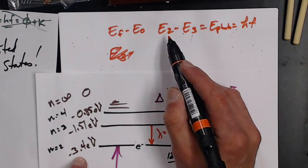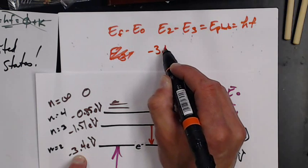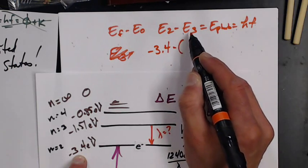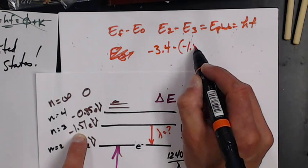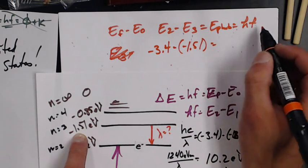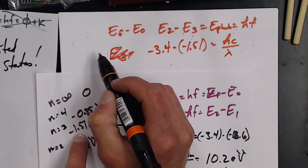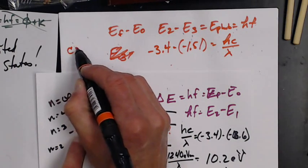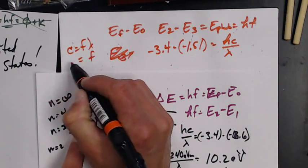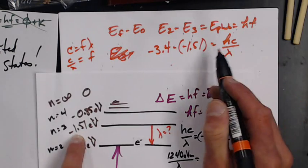So energy 2 is negative 3.4 minus E3, which is negative 1.51, and that's hf. This turns into hc over lambda. For those of you who don't remember, c is f lambda, so f is c over lambda. So now here we go.